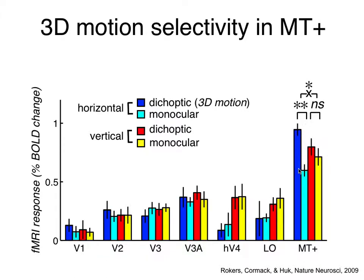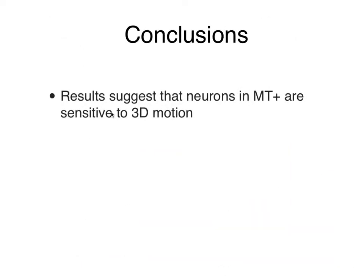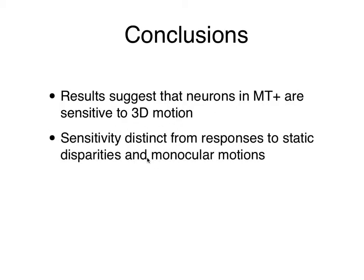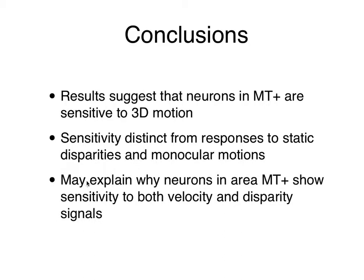To conclude, our results suggest that neurons in area MT are sensitive to 3D motion above and beyond selectivity to static disparities and monocular motions. This may explain why neurons in area MT have been found in previous studies to be sensitive to both velocity and disparity signals — something that was previously puzzling because velocity and disparity were not thought to give the same kind of information. In the context of 3D motion, it makes sense: 3D motion stimuli contain both cues, and you can use both to arrive at a 3D motion percept.